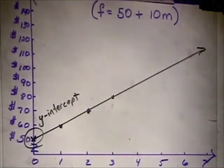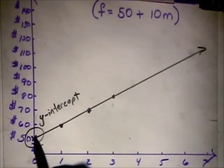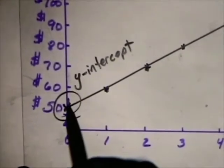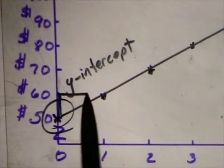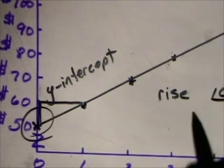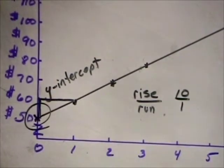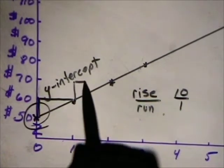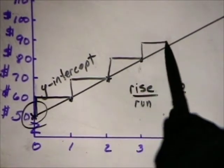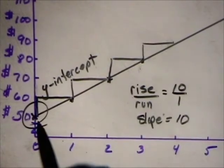The slope is the constant rate of change on your line — in other words, how steep it is. This is a positive slope because it goes uphill. Let's pick two points: from the first data point to the second, we go up ten dollars and over one minute. Rise equals $10, run equals one minute. Checking the next pair: same thing — rise of $10, run of one minute. So the slope equals 10 and the y-intercept is 50.